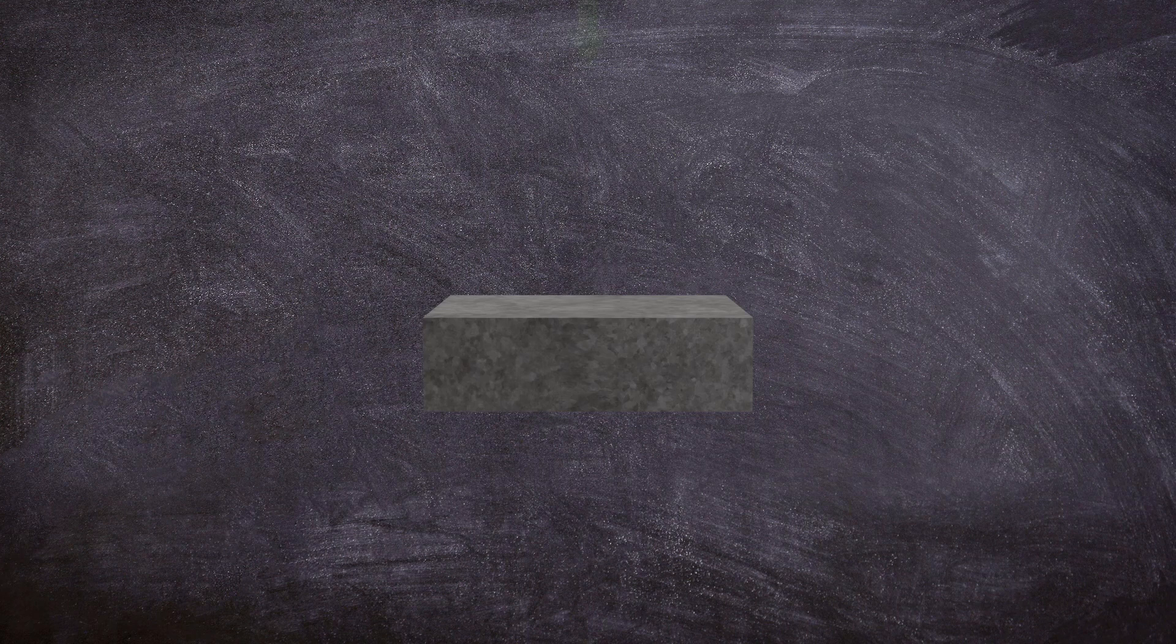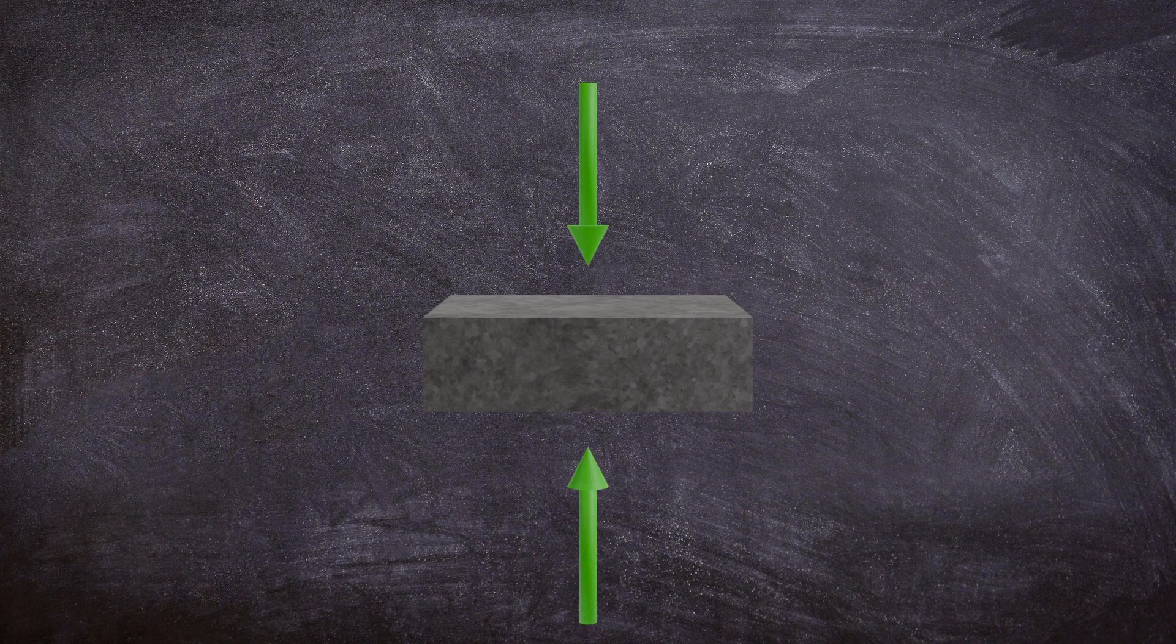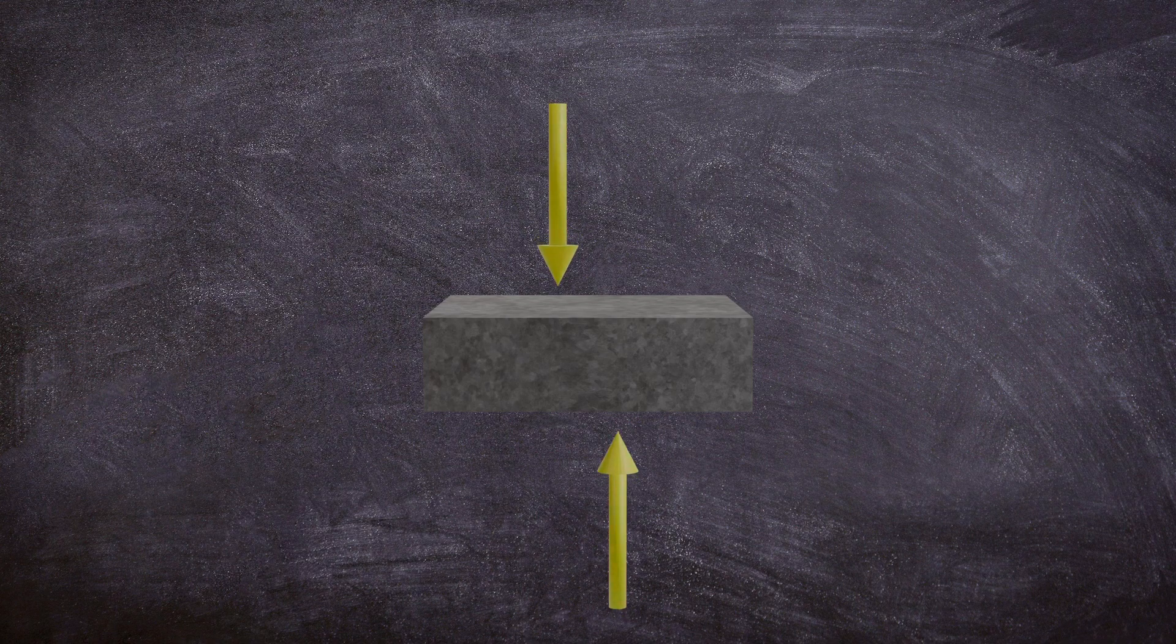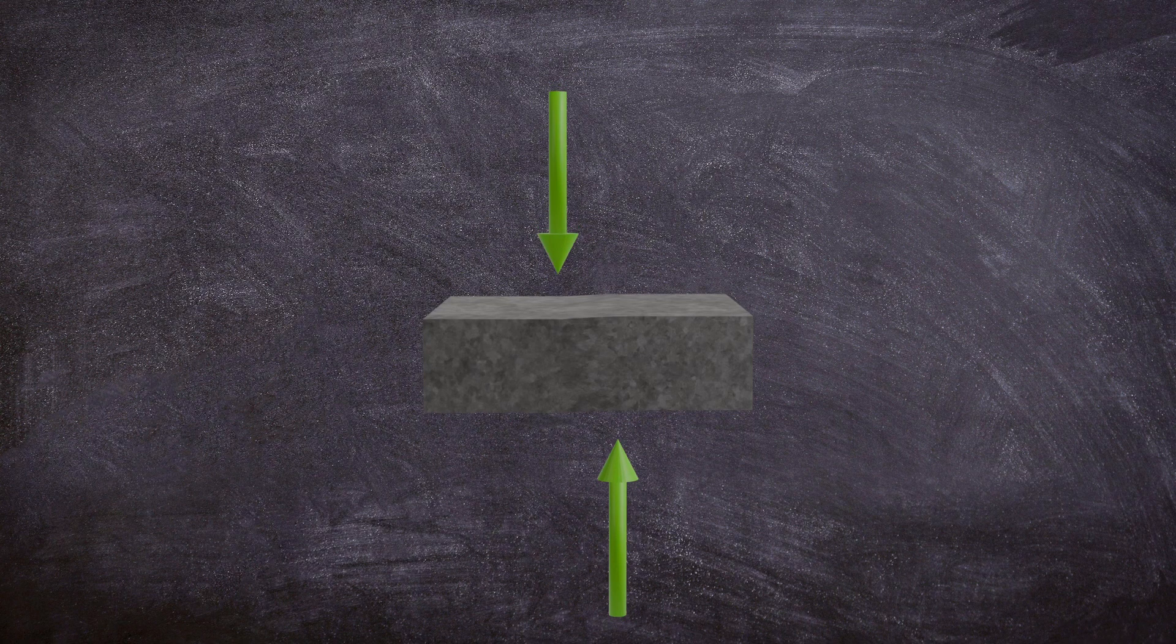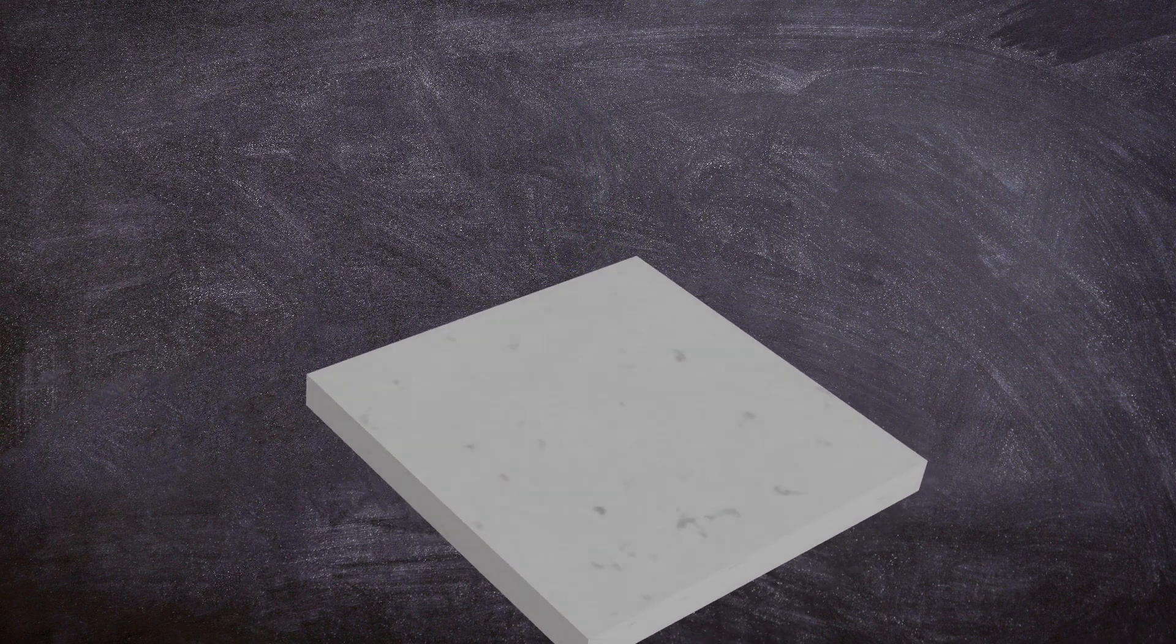Shear arises when two opposing forces act on different parts of an object, along parallel but slightly offset lines, causing deformation or fracture through a diagonal motion. Unlike tension, which pulls an object apart along the same axis, shear stress acts tangentially. A common example is cutting paper with scissors, where the blades exert opposite forces slightly apart, leading to the paper fracturing.